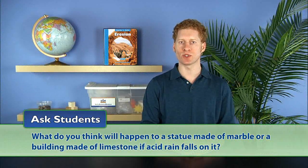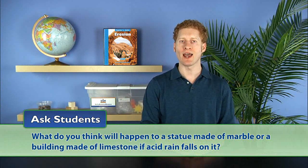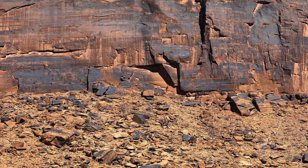Next, ask students, what do you think will happen to a statue made of marble or a building made of limestone if acid rain falls on it? Acid rain will slowly dissolve the calcite in the marble or limestone, causing the structure to become brittle and eventually crumble. Go on to explain that acids reacting with certain minerals and rocks, causing the rocks to break and crumble, is another form of chemical weathering.